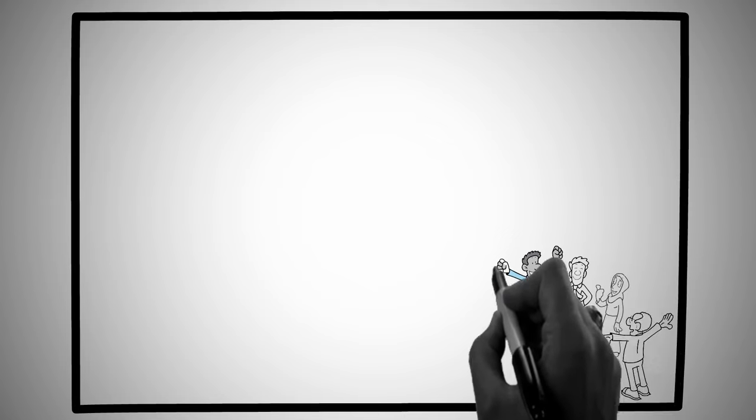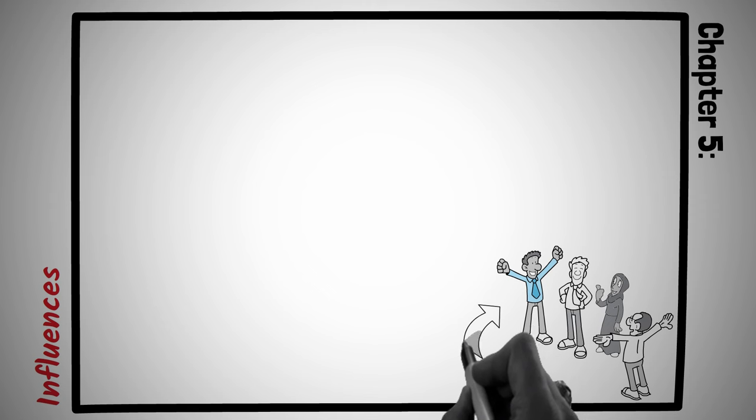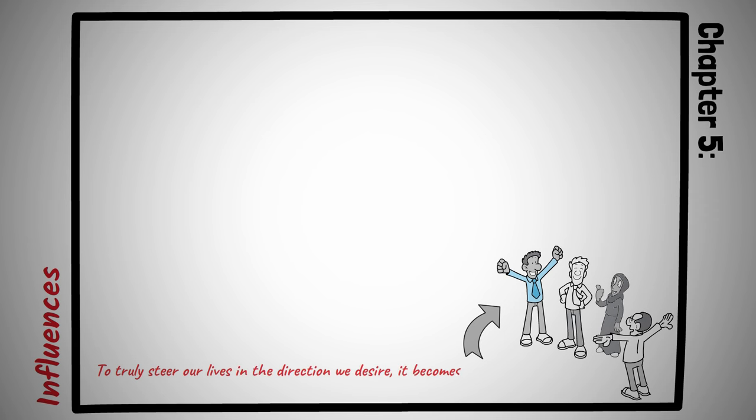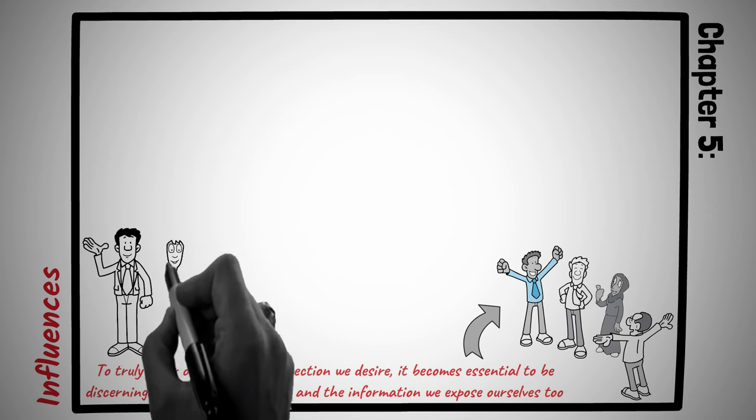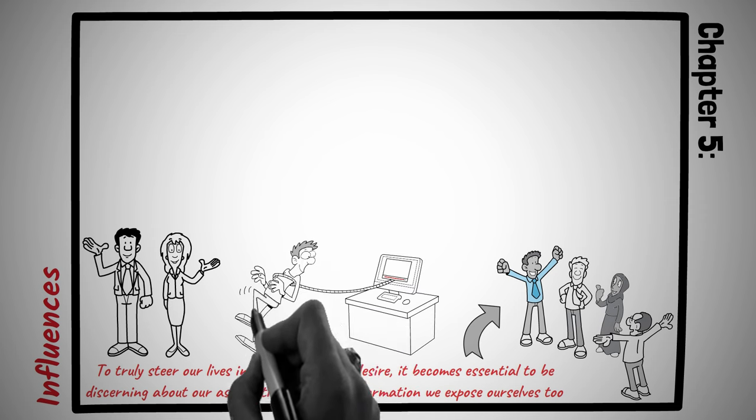We often hear the phrase, you are the average of the five people you spend the most time with. This sentiment underscores a profound truth. Our surroundings, both in terms of people and the information we consume, have a tremendous impact on our beliefs, choices, and habits. In the chapter titled Influences, the significance of these external factors on our personal growth and decision-making processes is explored in depth. To truly steer our lives in the direction we desire, it becomes essential to be discerning about our associations and the information we expose ourselves to. Imagine two young professionals, Aaron and Zoe. Aaron, fresh out of college, joins a group of colleagues who frequently go out for drinks, indulge in office gossip, and often complain about their jobs. They recommend him movies and TV shows that offer nothing more than mindless entertainment.